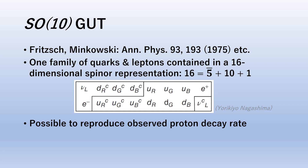The SO(10) GUT contains a 16-dimensional spinor representation. All 16 fermions, including a right-handed singlet neutrino, can be contained in a single representation with the right quantum numbers. The SO(10) GUT provides more than one route to break the symmetry and an extra handle which can be used to adjust the evolution of the running coupling constants minutely. For instance, it is possible to have the three constants meet together and to reproduce the observed Weinberg angle as well as the proton decay rate.